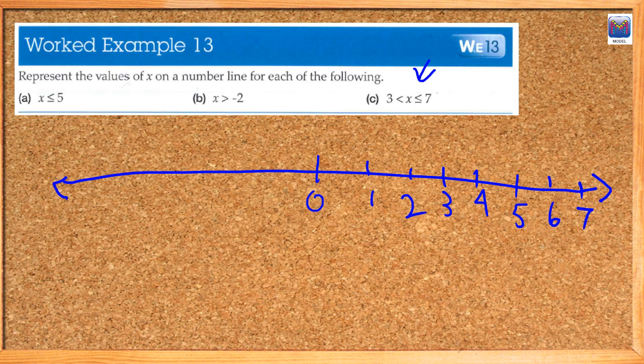Now obviously if you're doing this in your book, you do it neatly and you draw it with a ruler and so on. But since I'm doing it on the screen here, I don't have that luxury. Negative 1, negative 2, negative 3, negative 4, negative 5. It's important to note that the distance between each of these numbers should be the same physical distance on your page.